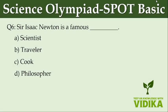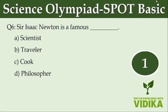Sir Isaac Newton is a famous dash. Option A, scientist. Option B, traveler. Option C, cook. Option D, philosopher.